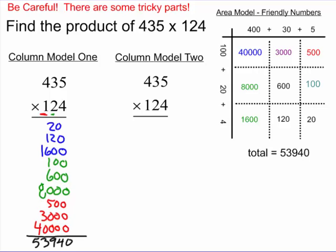Here's where column model number 2 might be a little bit of an advantage. But again, I'll say it the way people are going to say it. 4 times 5 is 20. Carry the 2. 4 times 3 is 12. Plus 2 more is 14. Carry the 1. 4 times 4 is 16. Plus 1 more is 17. So if you look, there's those first three pieces.